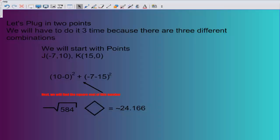So let's plug in two points. We will have to do it three times because there are three different combinations. We will start with points J(-7,10) and K(15,0).